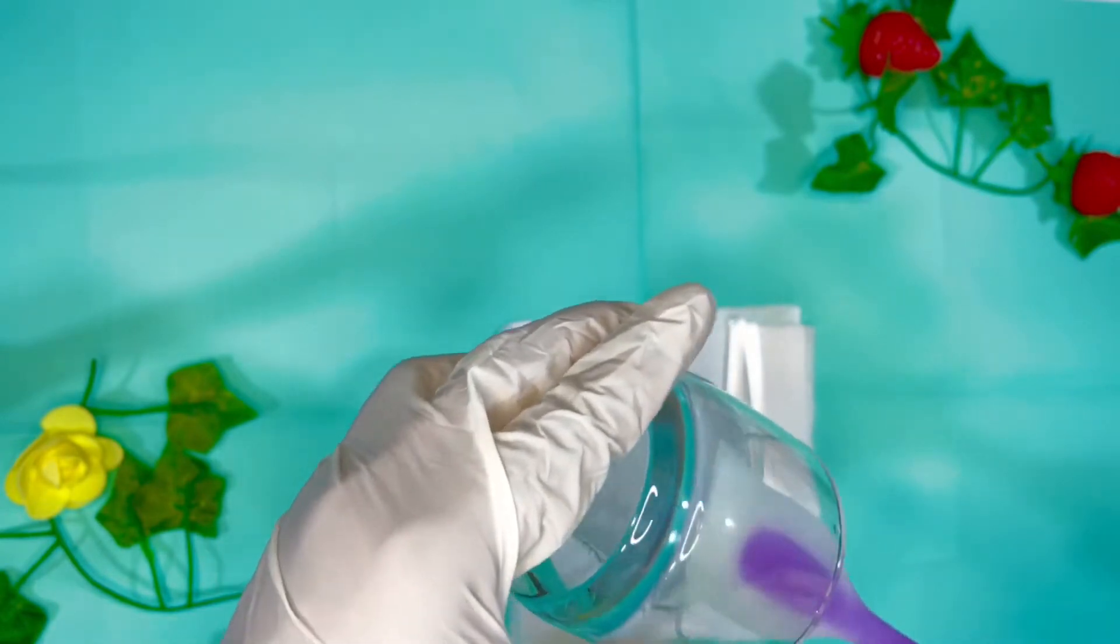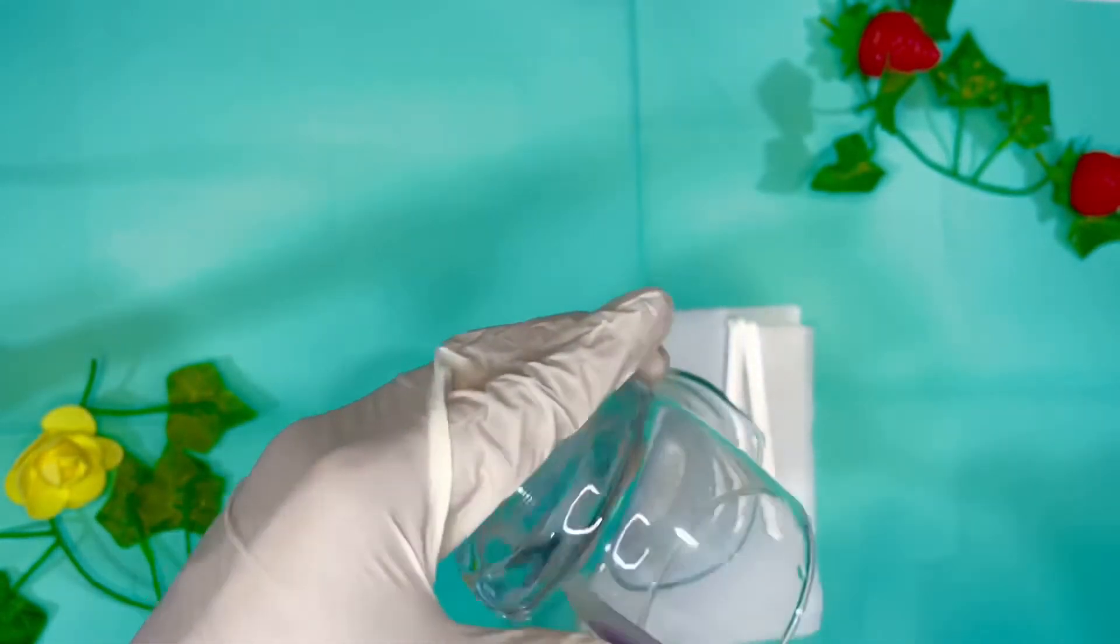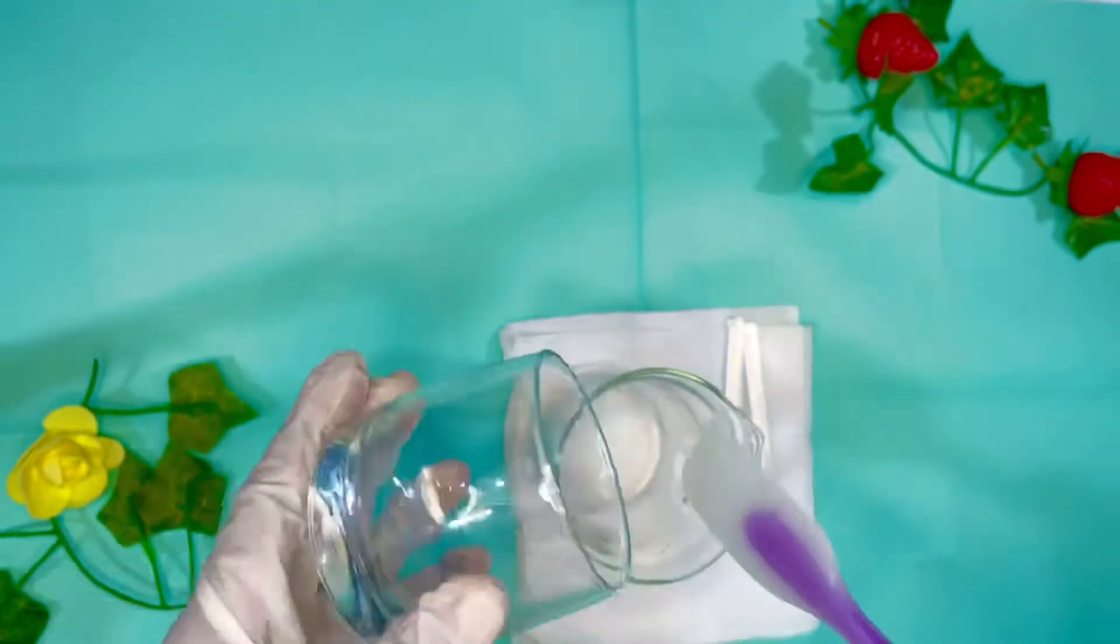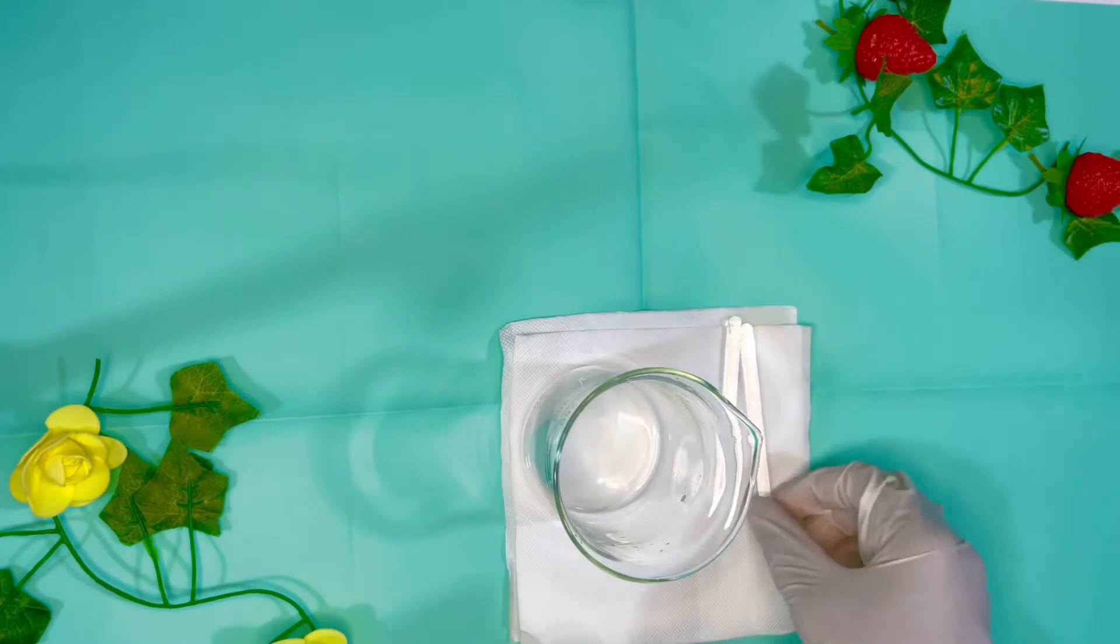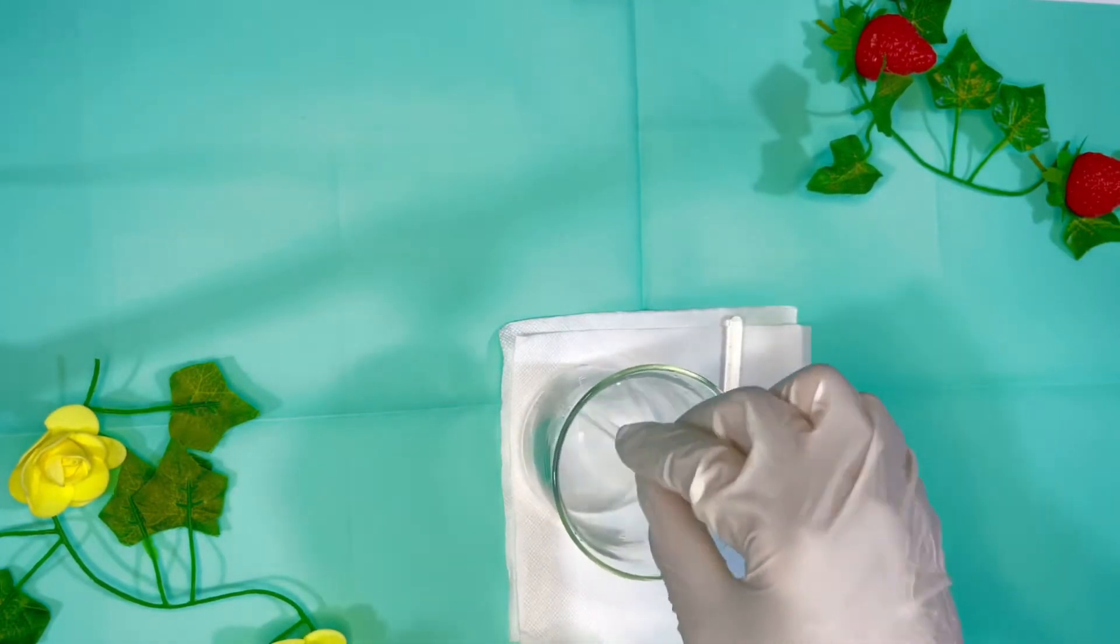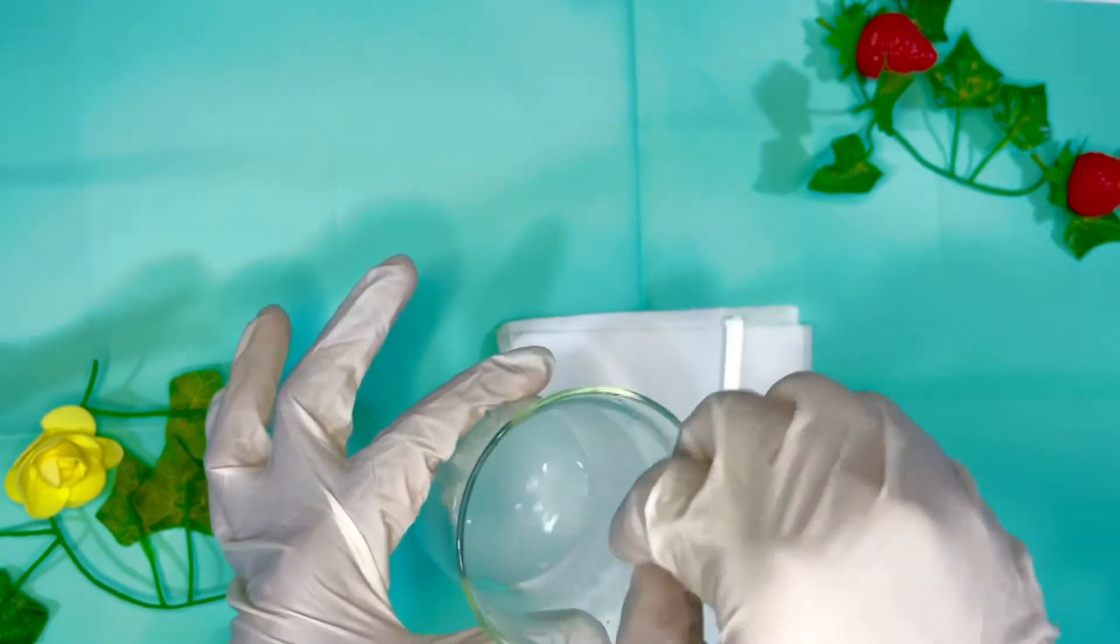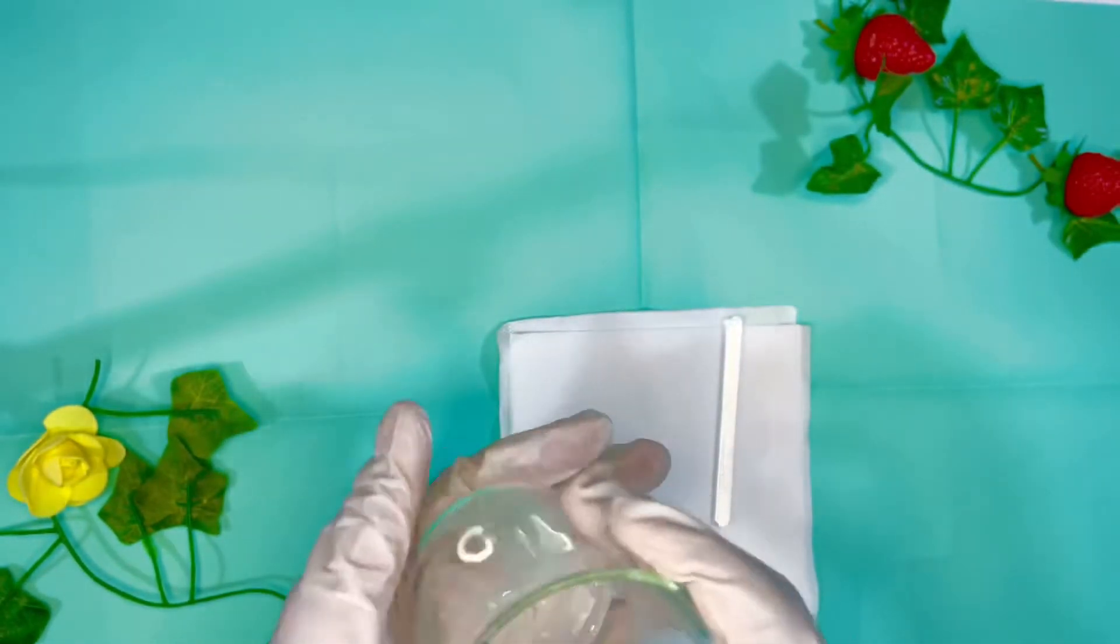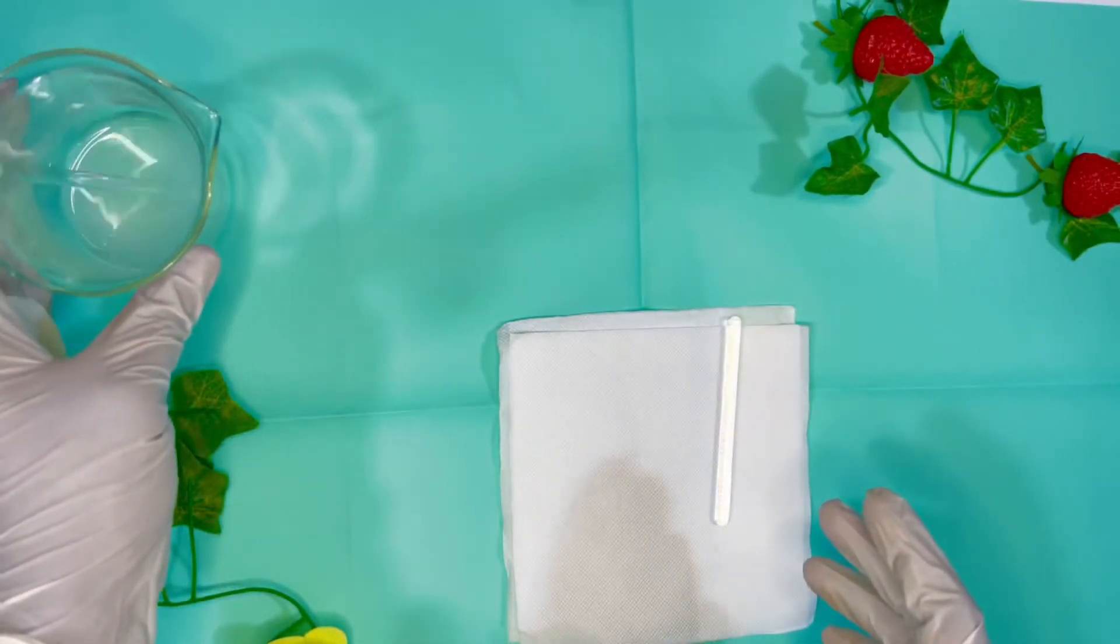And then set it aside for it to cool down so that it will drop below 100 degrees Fahrenheit for us to add it into our Phase B or into our other ingredients. So it's a little bit hot, so we're gonna set it aside for it to cool down.